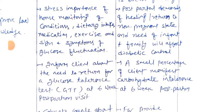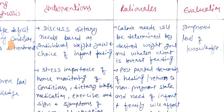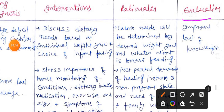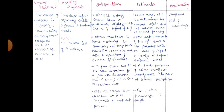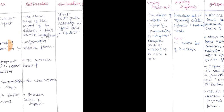After providing these interventions, we reach the final step of the nursing process. Evaluation: improved level of knowledge. This nursing care plan for diagnosis three is now complete. Next, we take nursing diagnosis number four.